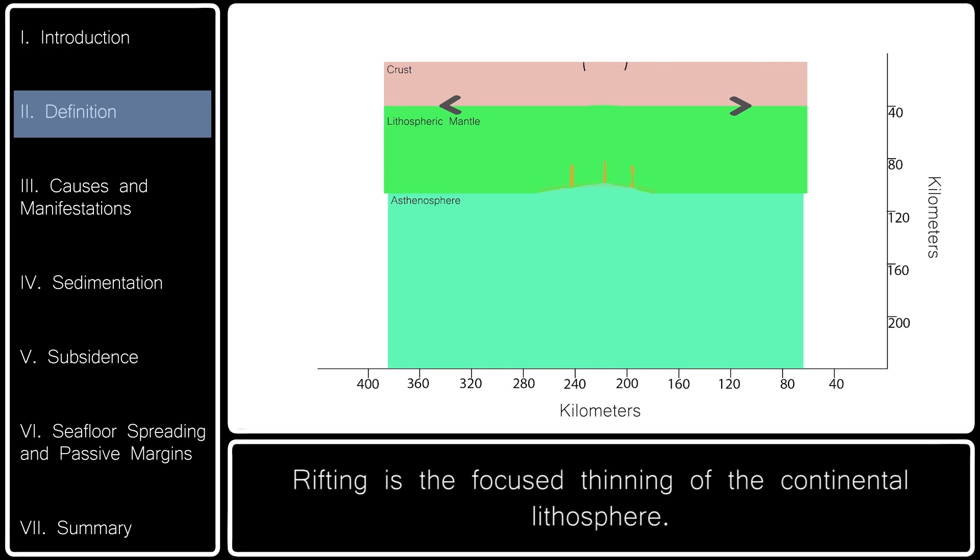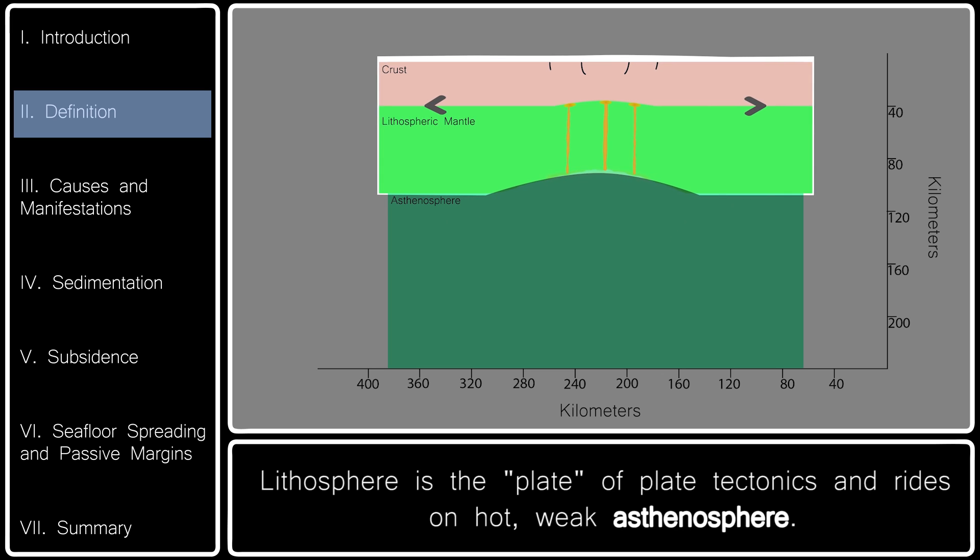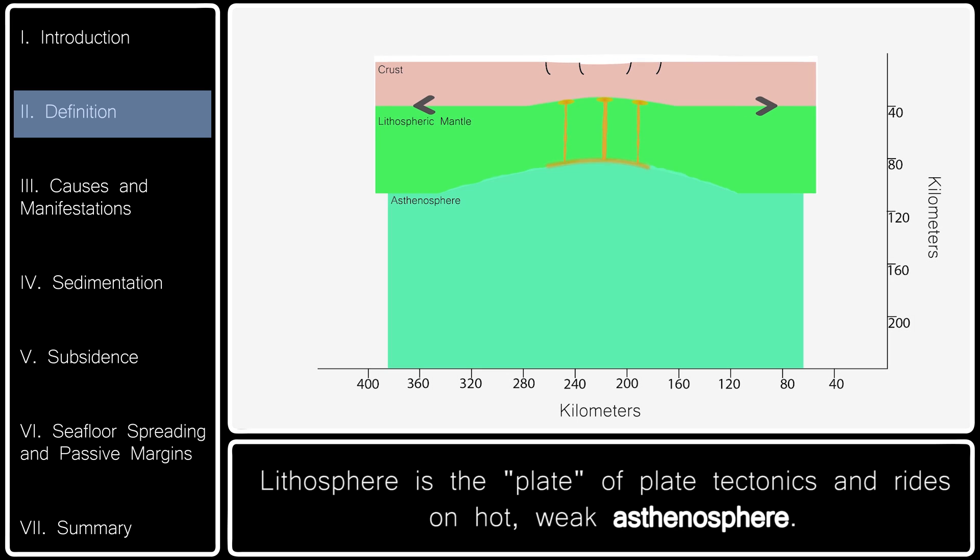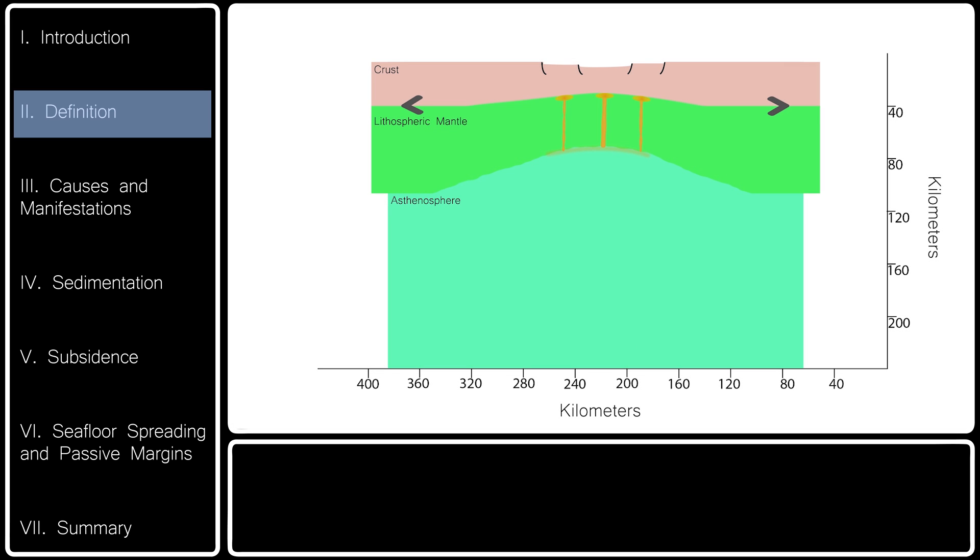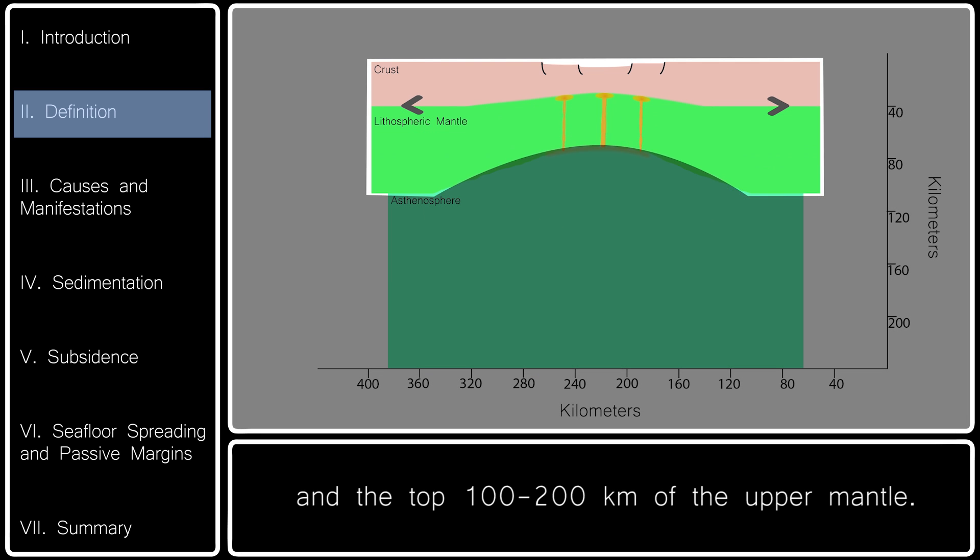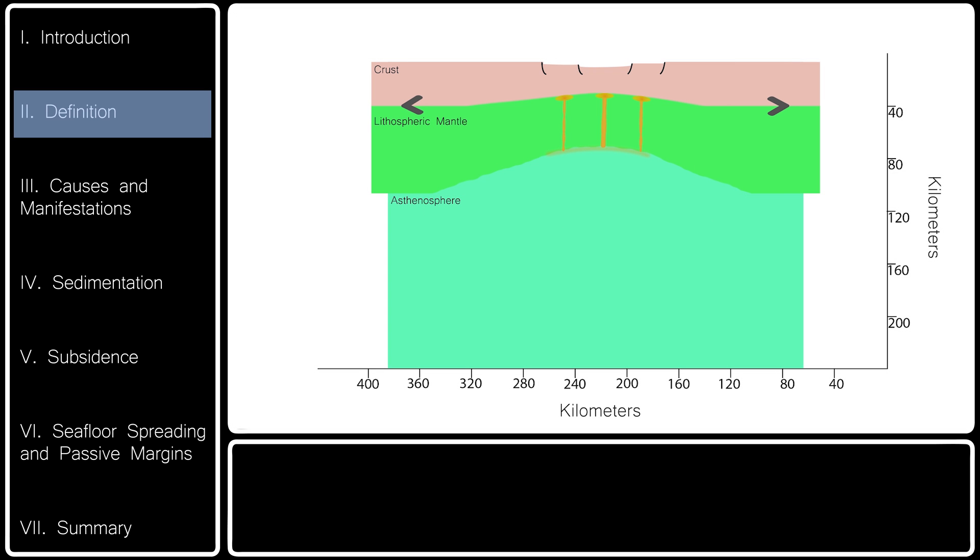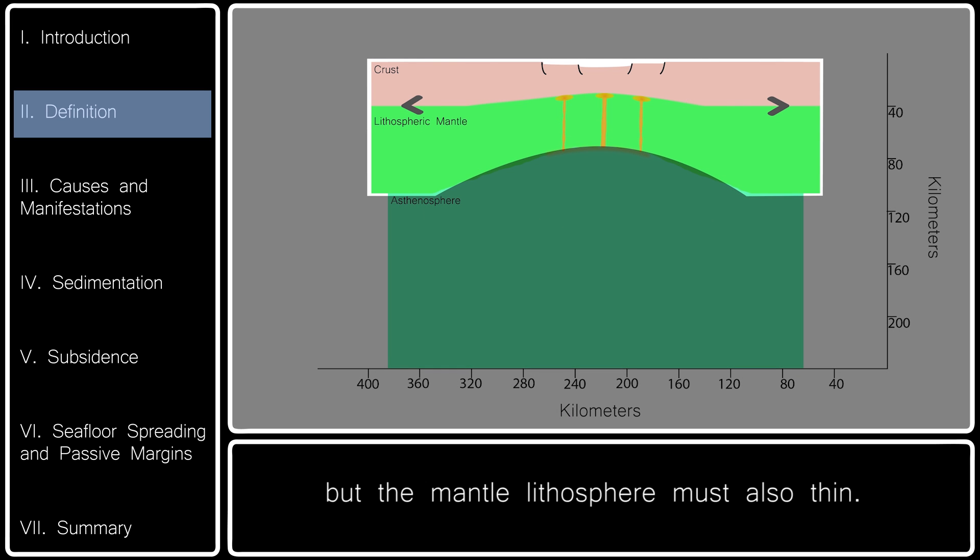Rifting is the focused thinning of the continental lithosphere. Lithosphere is the plate of plate tectonics and rides on hot, weak asthenosphere. Continental lithosphere consists of the continental crust, typically 40 kilometers thick, and the top 100 to 200 kilometers of the upper mantle. It is often mistakenly thought that only crust thins during rifting, but the mantle lithosphere must also thin.